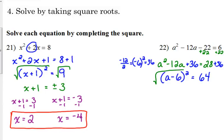And, we're going to take the square root. So, a minus 6 is equal to plus or minus 8. Split it into our two equations. a minus 6 is equal to positive 8. a minus 6 is equal to negative 8.